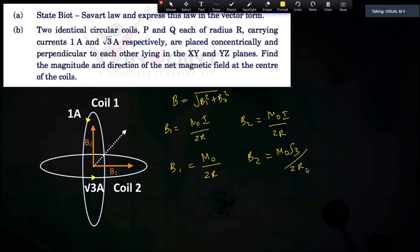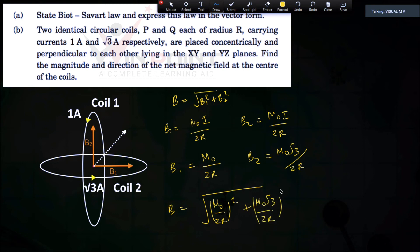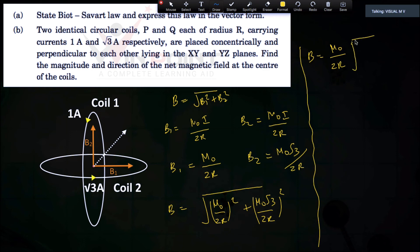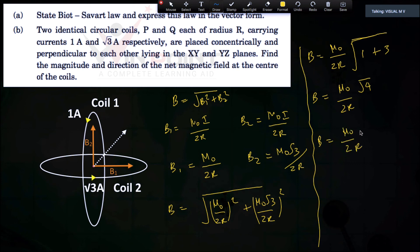Now B = √(B1² + B2²) = √[(μ₀/2r)² + (μ₀√3/2r)²]. Taking common terms outside the root: B = (μ₀/2r) × √(1² + (√3)²) = (μ₀/2r) × √(1 + 3) = (μ₀/2r) × √4 = (μ₀/2r) × 2. The 2s cancel, giving B = μ₀/r. This is the magnitude of the resultant magnetic field.